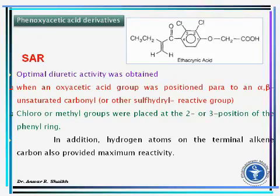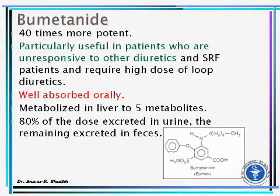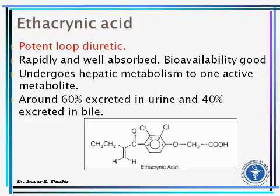Important loop diuretics: furosemide is the first loop diuretic on the market, administered orally and parenterally (IV and IM route). Bumetanide is 40 times more potent and particularly useful in patients unresponsive to other diuretics, and is well absorbed orally. Ethacrynic acid is also a potent loop diuretic.